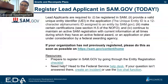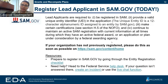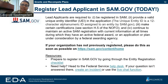Step two is to register the lead applicant on SAM.gov. Any applicant to EDA needs to be registered in SAM.gov, and by registering you will receive a unique entity identifier, otherwise known as a UEI. If you haven't done this and you're a lead applicant, go to SAM.gov today to start the registration process. This is critical.